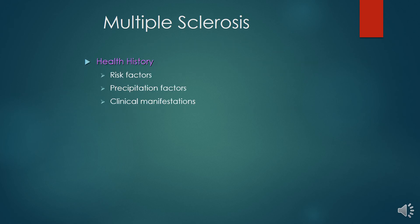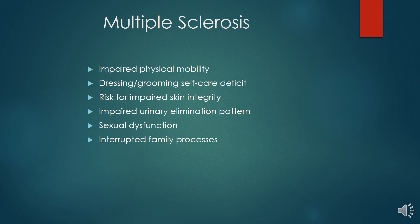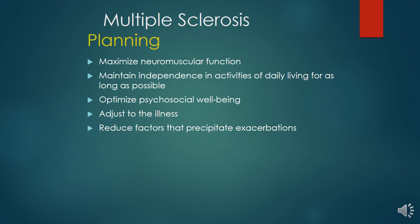In management, health history should be sought, risk factors analyzed, precipitating factors identified and clinical manifestations assessed. Impaired physical mobility should be assessed, along with self-care deficits, risk for impaired skin integrity, impaired urinary elimination patterns, sexual dysfunction and interrupted family processes. Management planning should aim to maximize neuromuscular function, maintain independence in activities of daily life as long as possible, optimize psychological well-being, adjust to the illness and reduce factors that precipitate exacerbation.